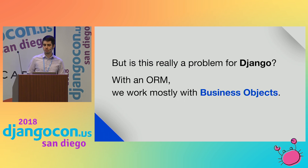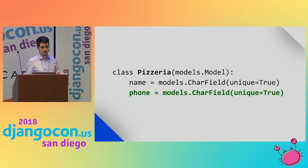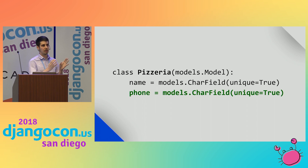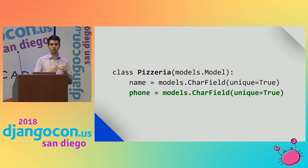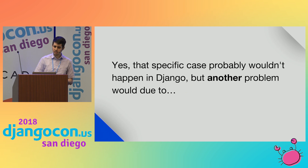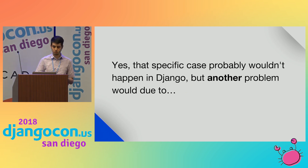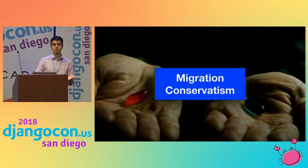But is this really a problem for Django? With our ORM, we work mostly with business objects. So at first, we would probably create a pizzeria model and have the name and the phone there — we wouldn't have the problem of putting phone inside a topping rating table, because we'd design with business objects like pizzeria and rating. That specific case probably wouldn't happen in Django.